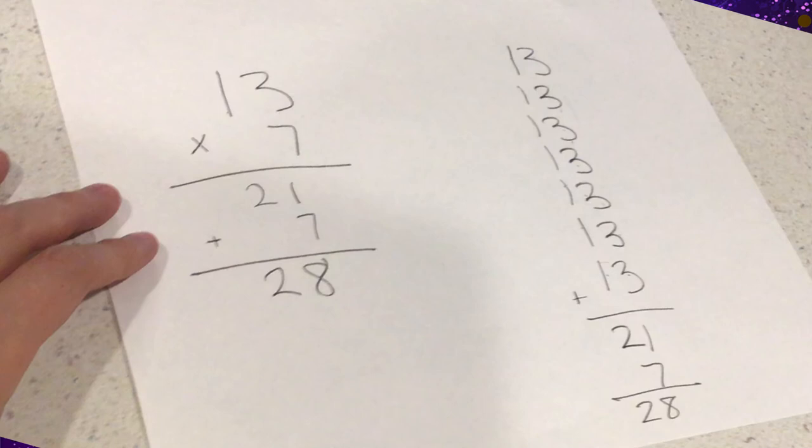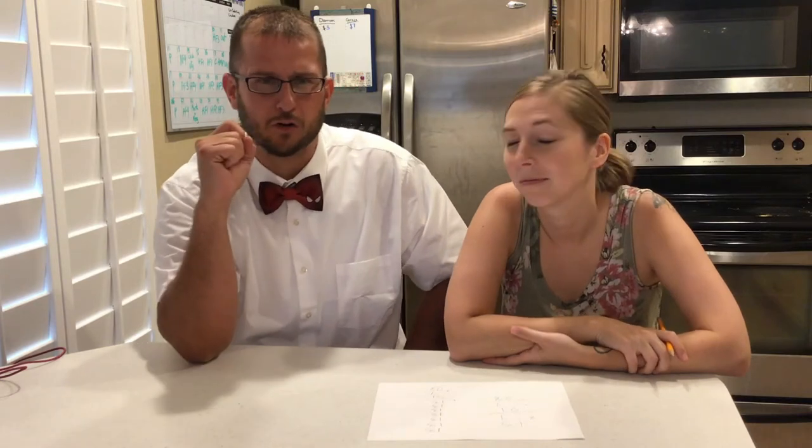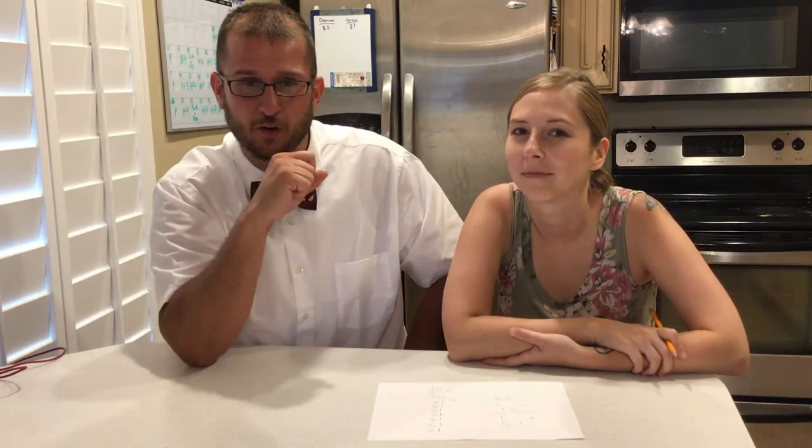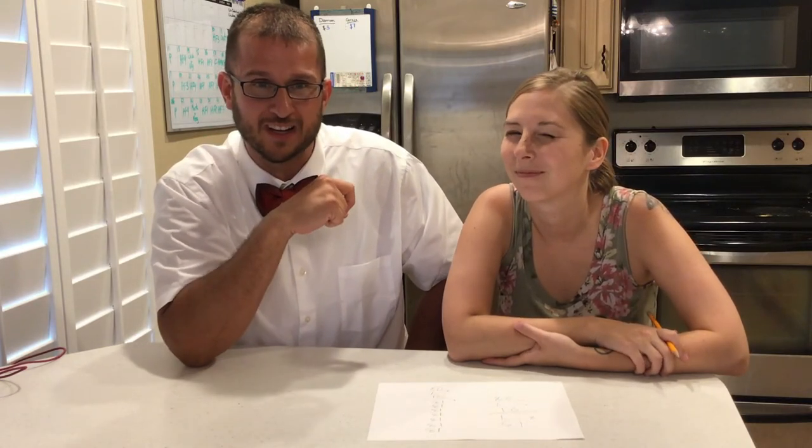There it is! Thirteen times seven, it's a nifty trick. Thirteen times seven equals twenty-eight and thirteen added seven times equals twenty-eight. Now it's up to you apprentices, can you figure out what her magic trick is?